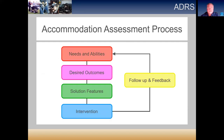The accommodation process looks like a modified version of your standard engineering process, where we take a look at the needs and abilities of the individual, determine what the desired outcomes are — what we want them to be able to do — then start looking at features of different solutions, such as whether it needs to work inside or outside, in light or dark, and whether it's electronic or mechanical. Then we determine what intervention we're going to utilize and follow up to get feedback on how it's working.